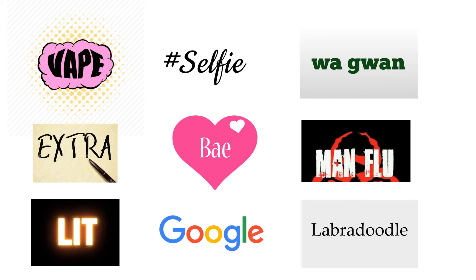Then we have something like 'labradoodle.' This is what we call a blend word — you take a labrador and a poodle and blend those words together, taking some letters from one and some from the other. As people breed different dogs, they're calling it a labradoodle to let people know it's half labrador, half poodle. Is that quite harmless and sensible? They need to call this new breed of dog something. Or does it get a bit silly? Jeggings — jean legging. Does that make you kind of cringe when you hear that one? Something to think about.